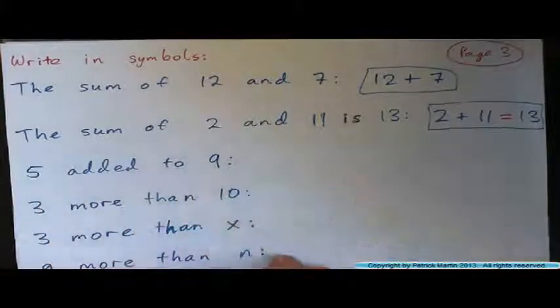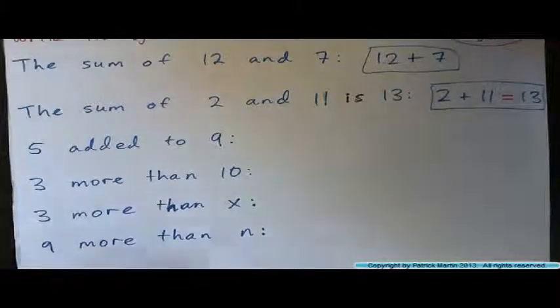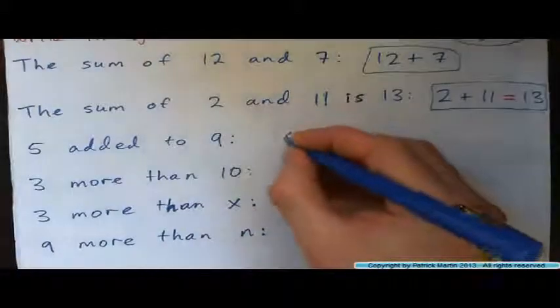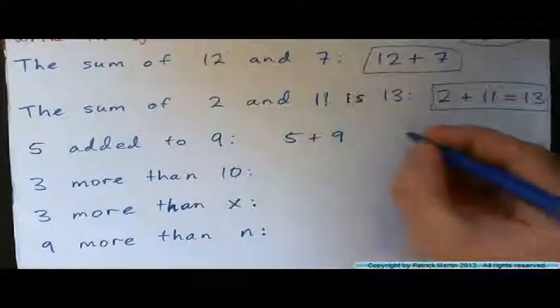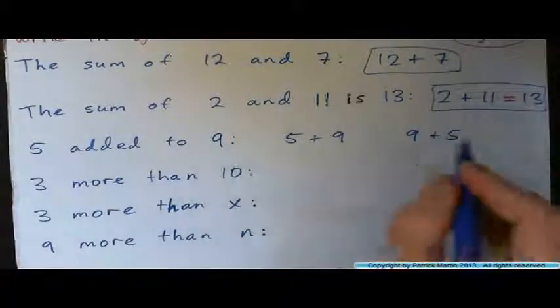Five added to nine, how would you represent that? Five added to nine. Well, there's two ways. You could go five added to nine, or you could start with nine and add on five. Five added to nine. So this way or this way.